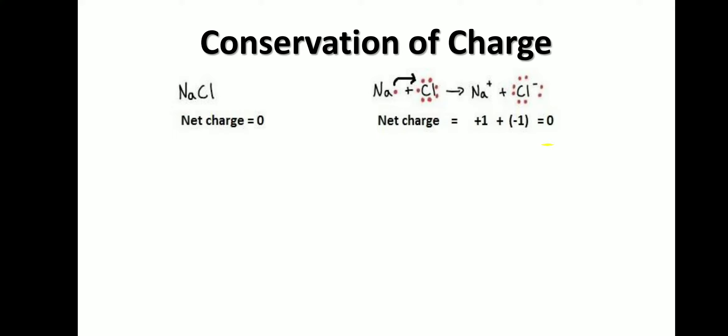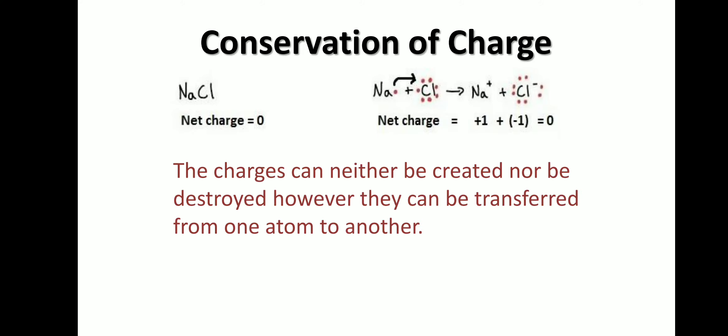The net charge before is zero and the net charge after is zero — there is no change. So we can say there is no production of charge and there is no destruction of charge. We cannot create charge or destroy charge; we can only transfer the charge or electrons from one atom to another. This is called conservation of charge: charges can neither be created nor destroyed, but they can be transferred from one atom to another.